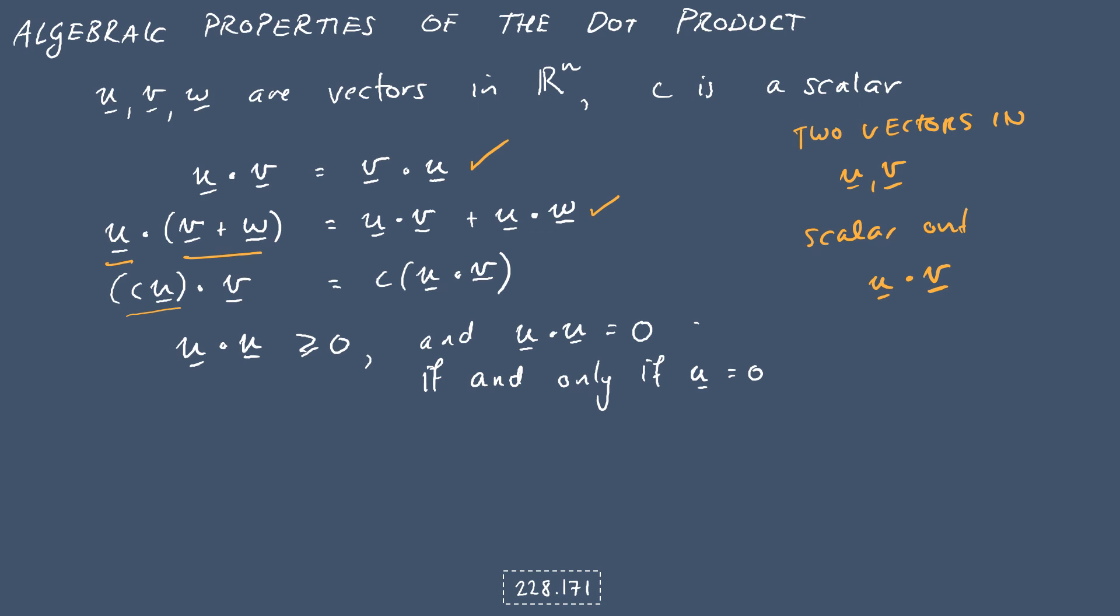And the last property, which is to do with the length that we defined, dot product of u with itself is always positive or zero. So you take a vector and you take its dot product with itself, you get a positive number, unless that vector is the zero vector. And if that's the case, then the dot product will be zero. And there's no other way to get zero unless that vector is the zero vector.